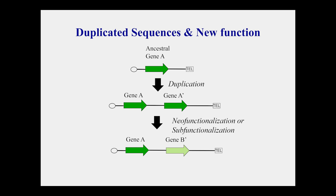We're interested in more complex forms of genetic variation, specifically the role of duplicated sequences. Duplicated sequences are a two-edged sword in our genome. On one hand, they provide the raw material for the evolution of new gene function. A gene — call it gene A — becomes duplicated to gene A-prime, and additional mutations lead to a new gene product, gene B, either with new function or having acquired one of the functions of gene A.